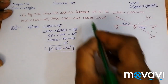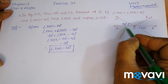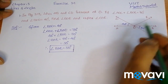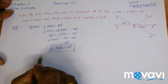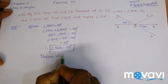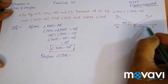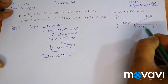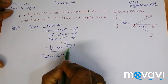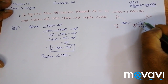Now we have to find reflex angle COE, that is COE. This reflex angle means the sum of angles AOC, AOD, BOD, and BOE. We already found that angle BOE is equal to 30 degrees, so this angle will be 30 degrees.